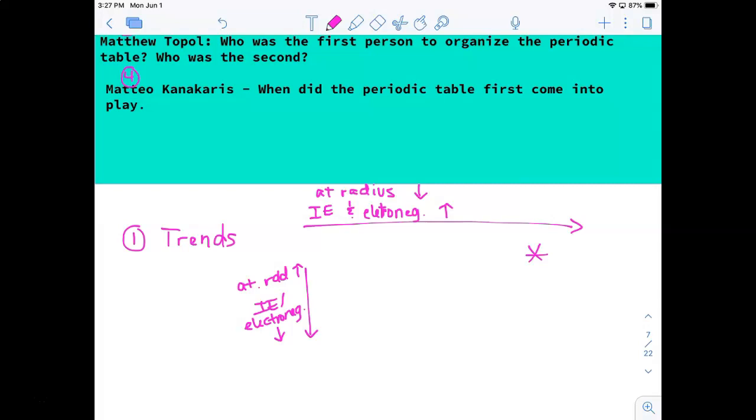You want to ignore the noble gases because they don't lose or gain electrons because they don't react. So fluorine, if you're ignoring the noble gas column, fluorine is the furthest to the right and the furthest to the top.